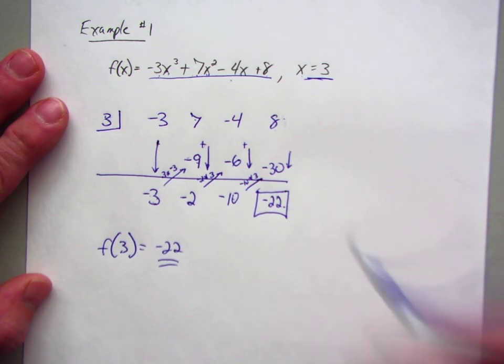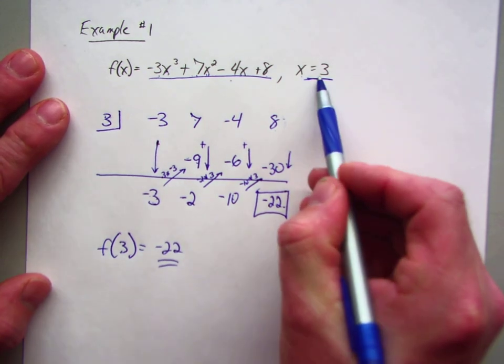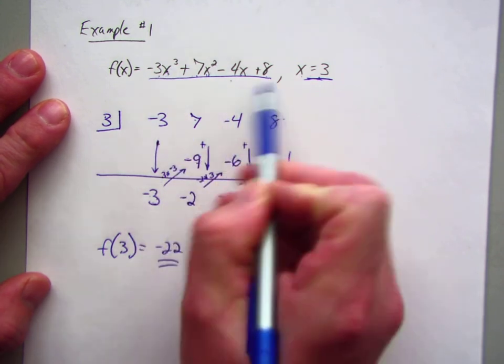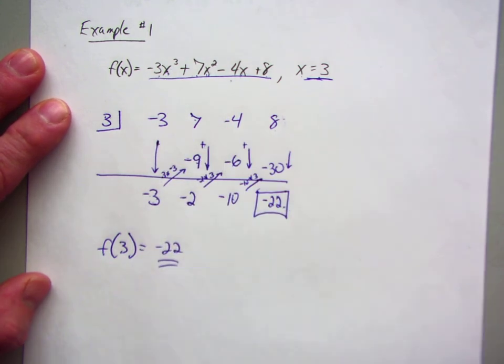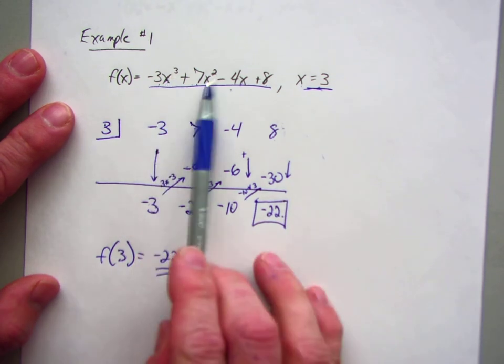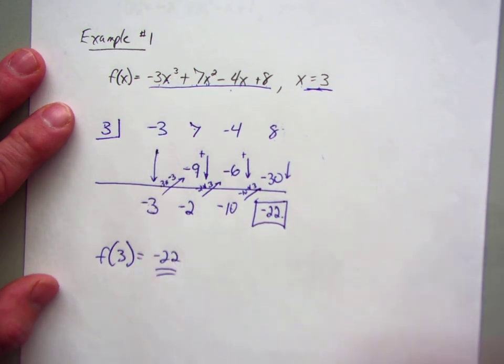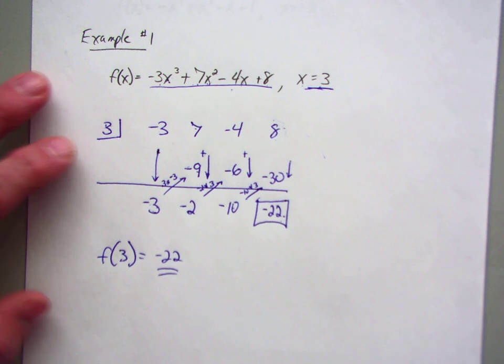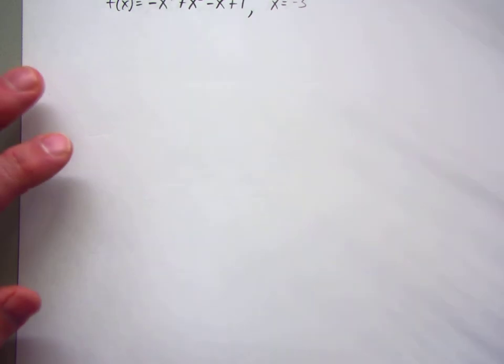In other words, if I put 3 substituting for x here, here, and here, and use direct substitution, you'll still get negative 22. I think this is a lot easier to do because you don't have to worry about cubing or squaring, that kind of stuff. It's just you multiply, add, multiply, add, and just keep doing that until you come to the very end. So let's look at another example.